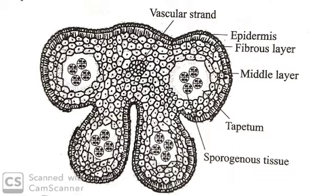The middle layer is the third layer of the anther wall, lying below the endothesium. It consists of three layers of thin-walled parenchymatous cells and is also known as the parietal layer. The middle layer is absent in Vallisneria. The middle layer stores starch grains.